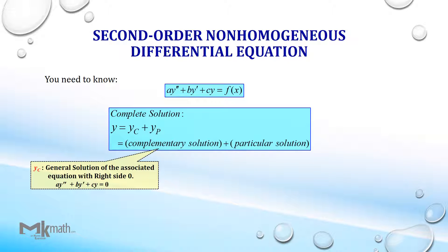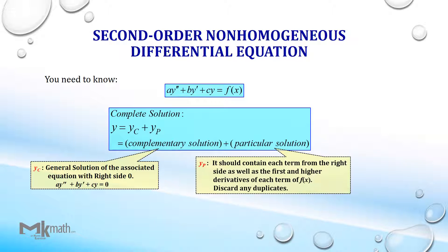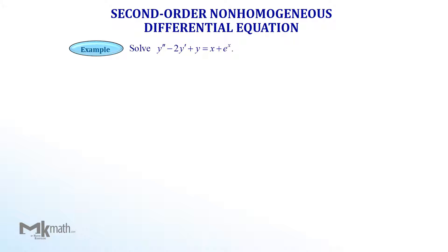The second part is finding the particular solution, Yp. Let's take a look at the example: solving the differential equation Y'' minus 2Y' plus Y equals x plus e to the x.